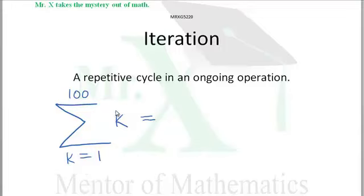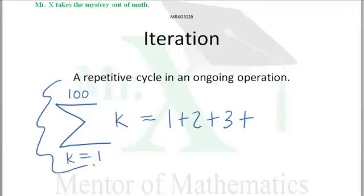This is a shorthand actually for simply adding the integers 1 through 100. So even if this looks like Greek to you, it is Greek, that's a capital sigma. What we have here is an iteration.